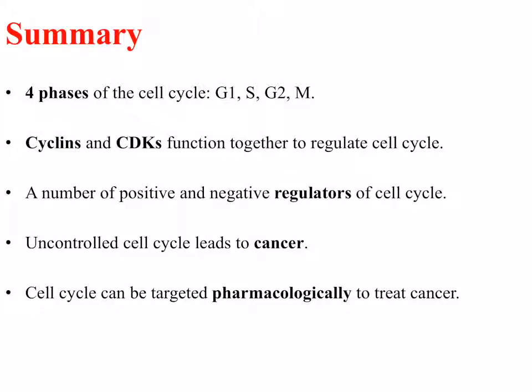In summary: there are four distinct phases of the cell cycle. Key proteins include cyclins and cyclin-dependent kinases, which function together to regulate the cell cycle. There are positive and negative regulators of the cell cycle. Diseases like cancer can arise due to uncontrolled cell cycle activity, and this can be targeted pharmacologically to treat cancer.